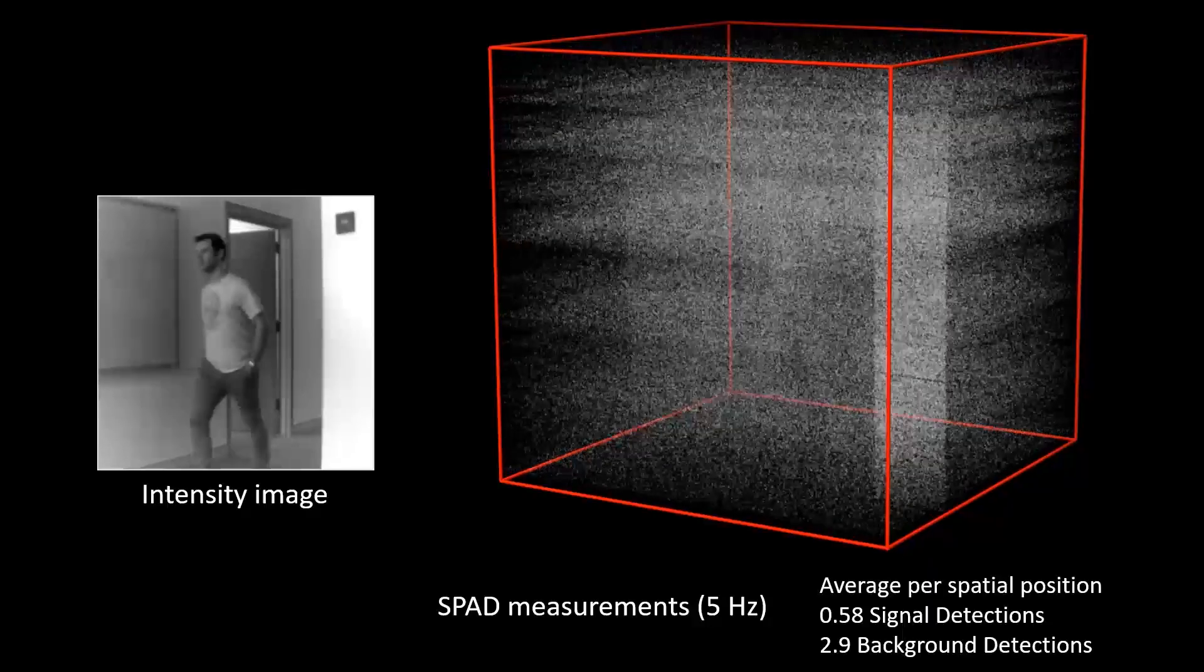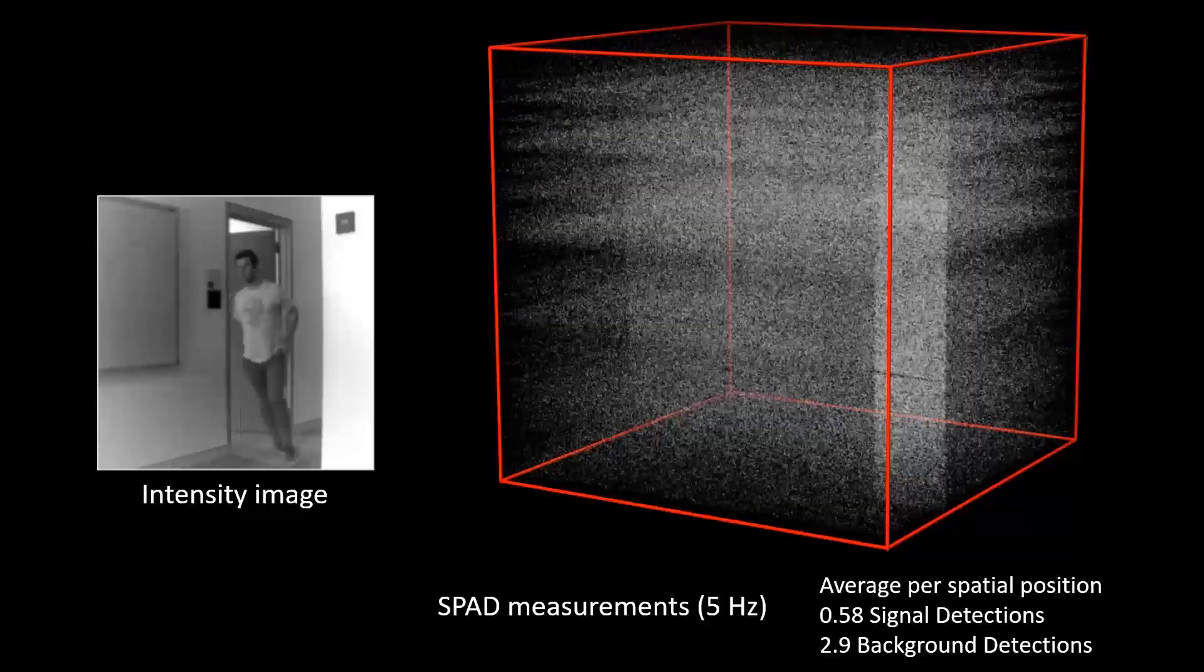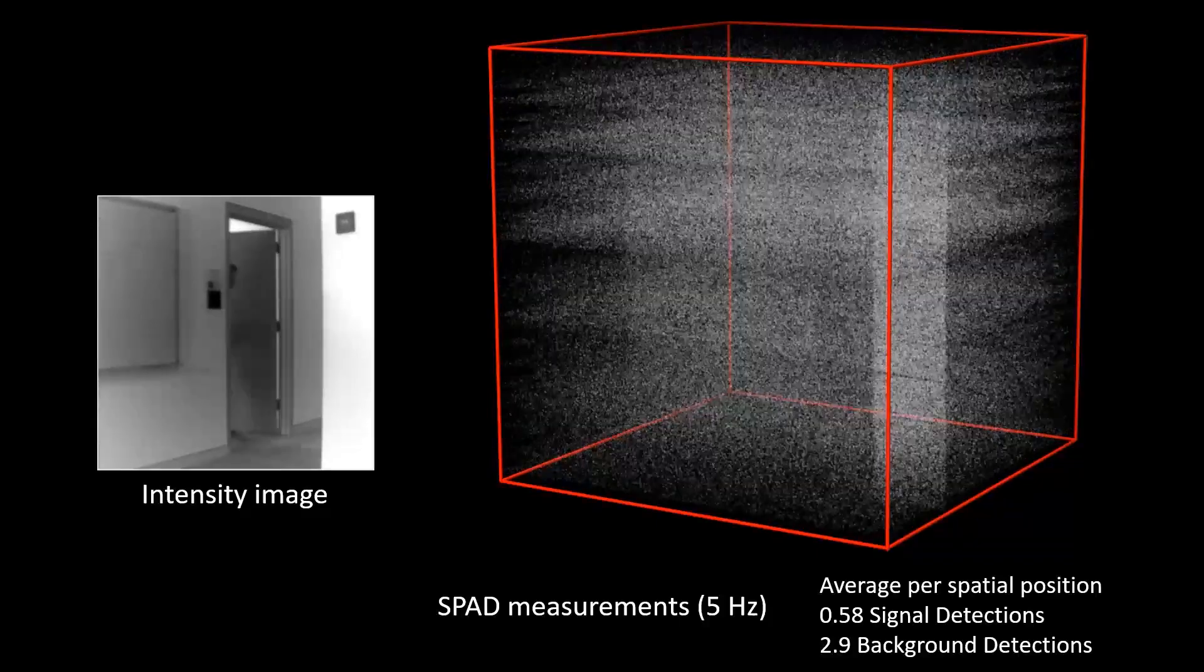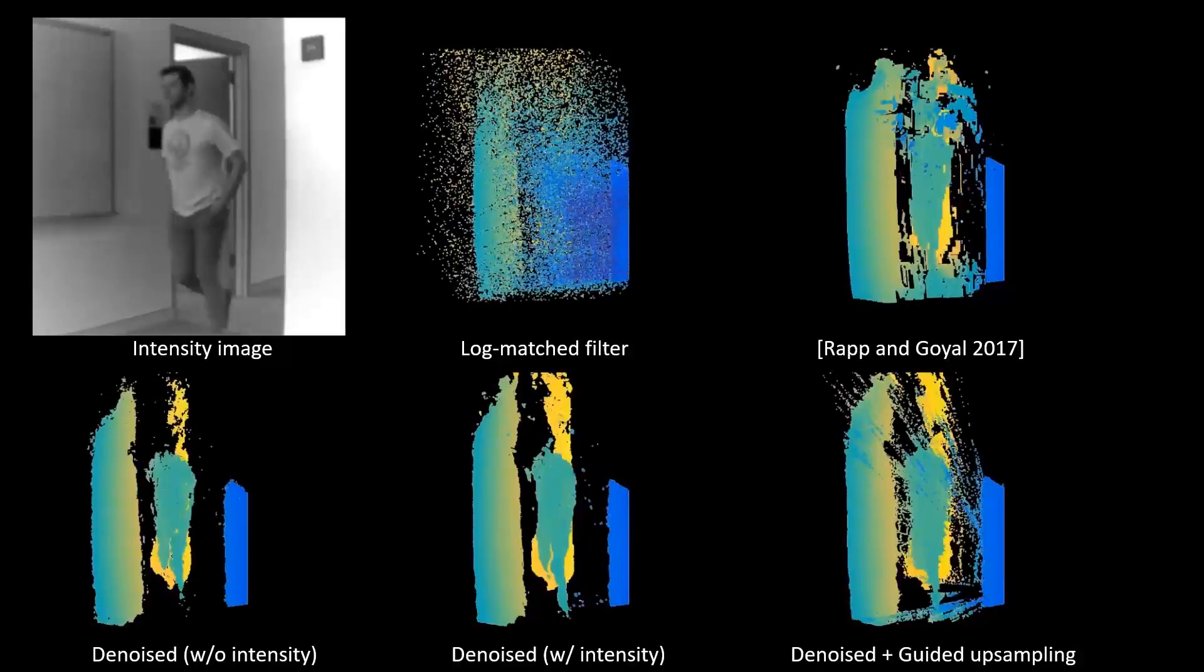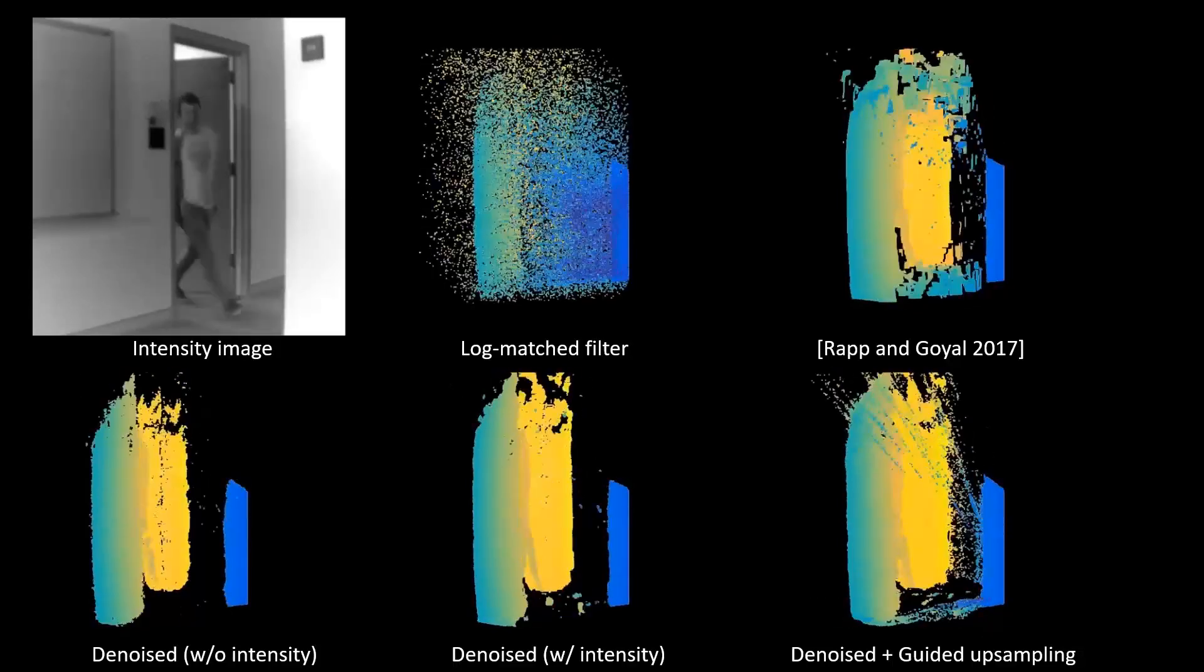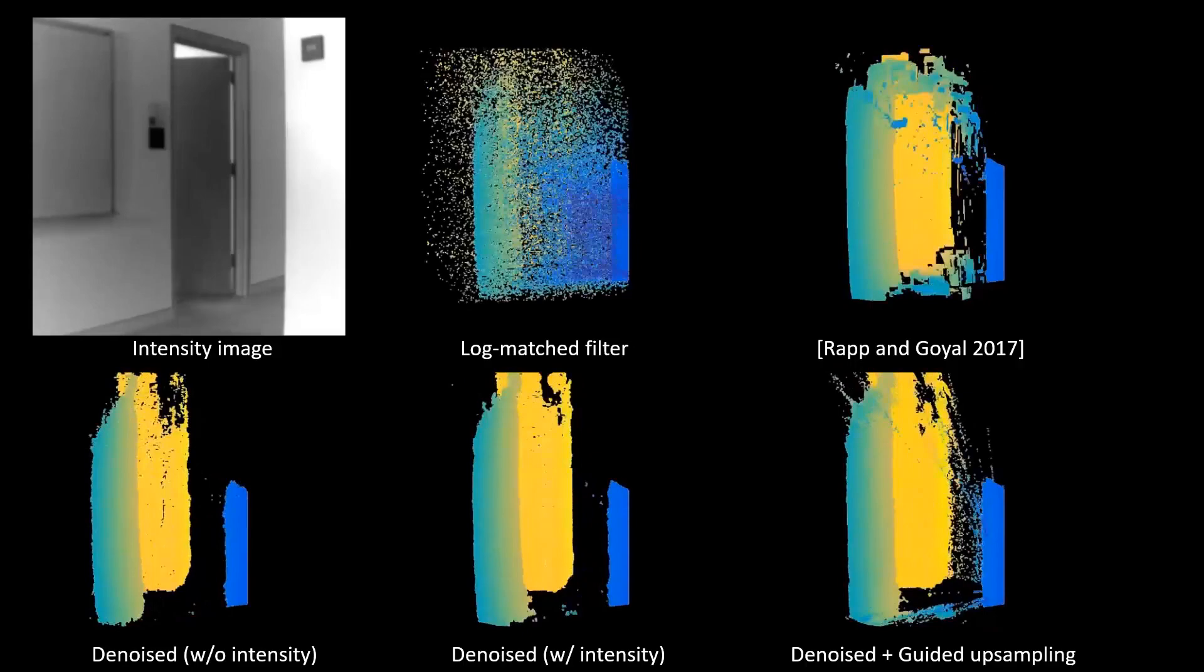This scene was captured at a lower frame rate of 5 Hz to increase the number of detected photons at ranges up to 4 meters. Here is the reconstructed 3D geometry. Our approach accurately resolves the geometry of the person walking through the hallway.